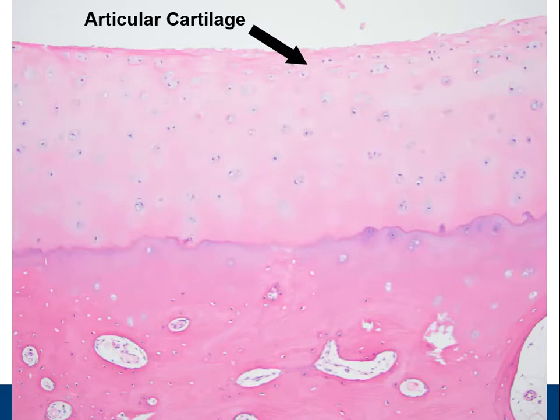Joints also consist of articular or hyaline cartilage. This cartilage functions to support, cushion, and protect the associated bones, as it is very durable, tough, and strong. Macroscopically, it has a glossy white smooth surface that is found at the end of bones. Histologically, it is composed of type 2 collagen, proteoglycans, chondrocytes, and water.